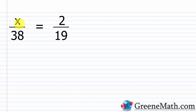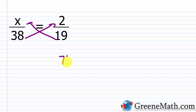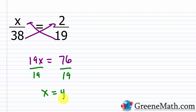For example, if I have x/38 = 2/19, all I have to do is cross-multiply. If two fractions are equal, the cross-products should be equal. So 38 times 2 is 76, and that equals 19 times x, or 19x. Now I just solve in one step: divide both sides by 19, and I get x = 4.